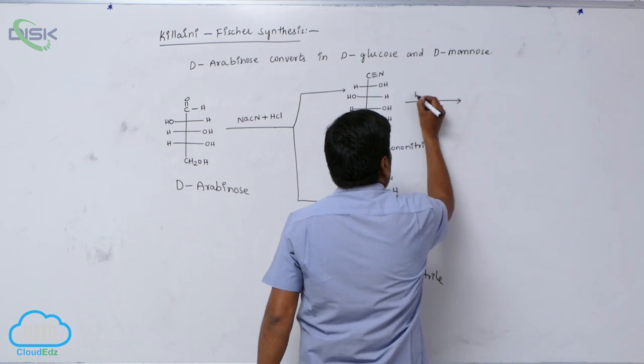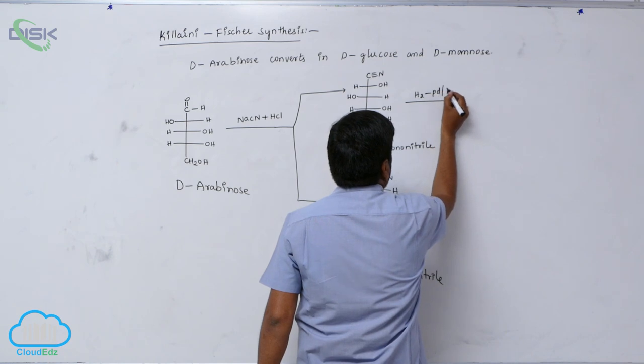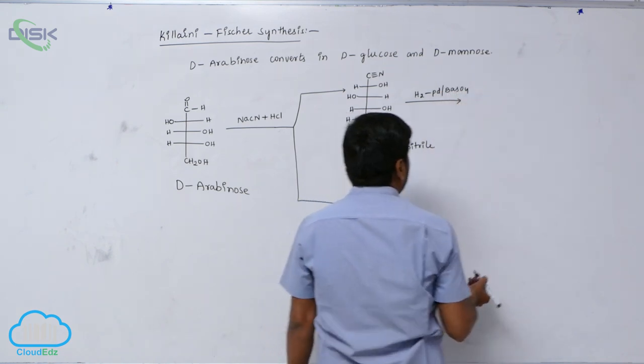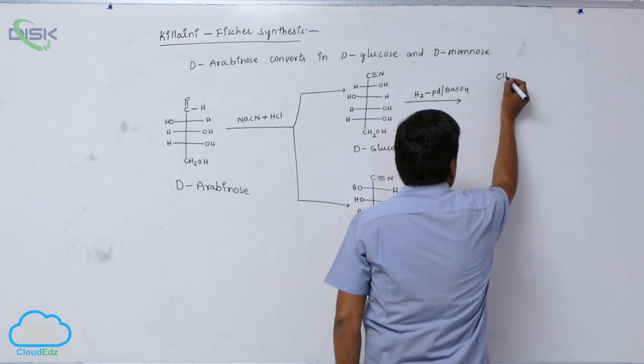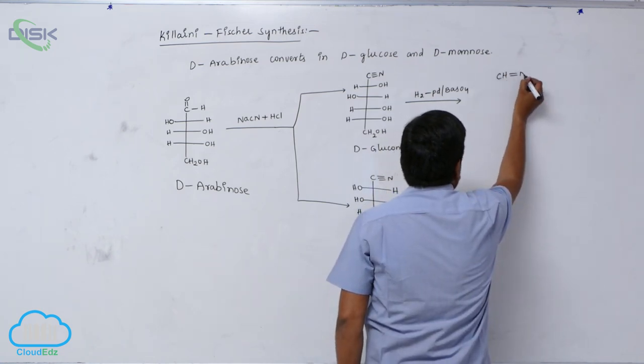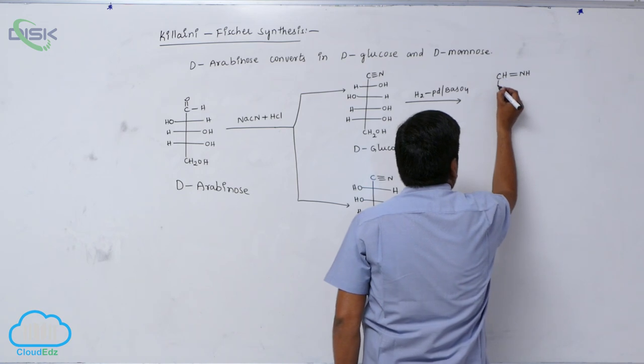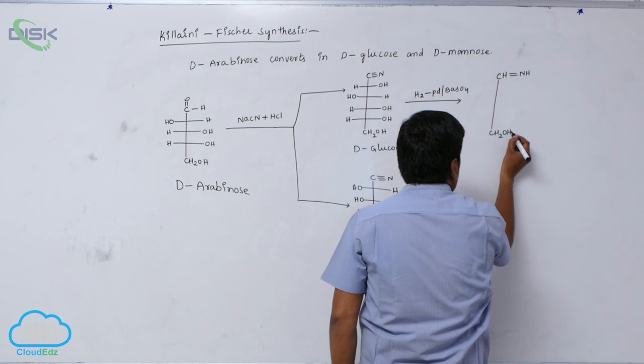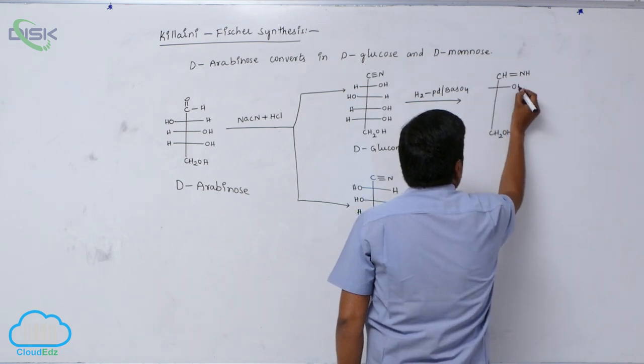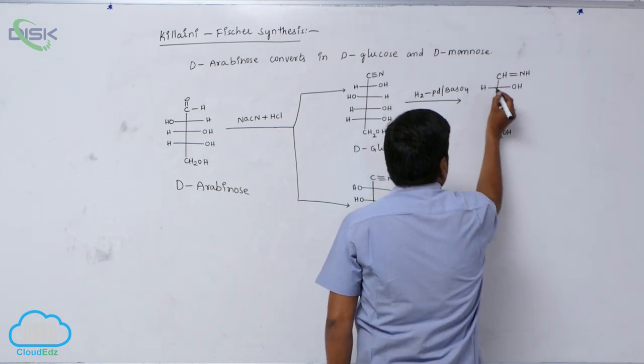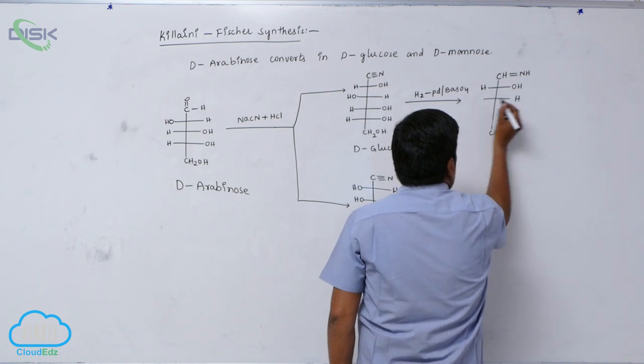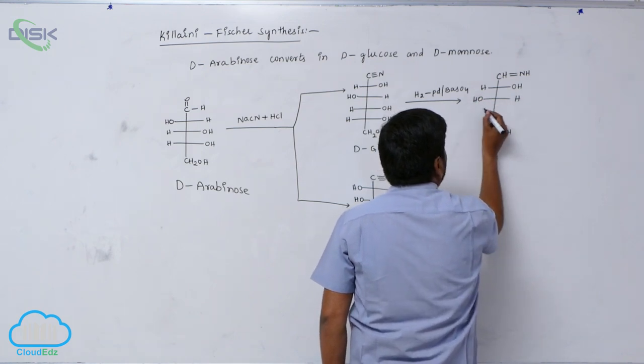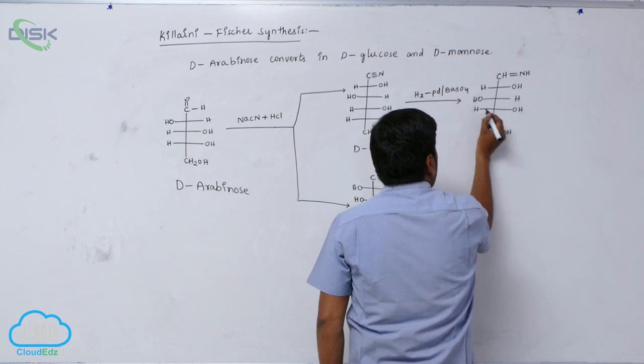This on reaction with hydrogen, palladium in presence of barium sulphate, is converted into imine. CH2OH, OH hydrogen, hydrogen OH, OH hydrogen.